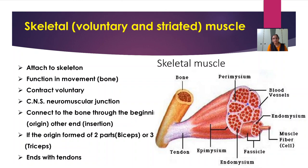The contraction is voluntary. The skeletal muscle's neuromuscular junction is under the control of the nervous system. It connects the bone at the origin with the help of tendons and ends at the insertion. If the origin is formed of two parts, it is called biceps; if formed with three parts, it is called triceps.